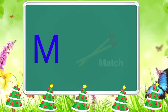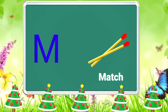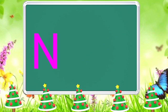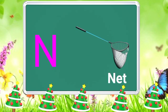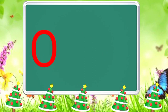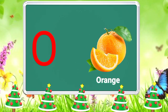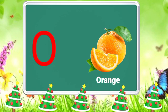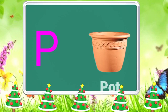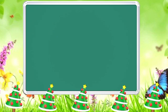M is for Mat, M-M-Mat. N is for Net, N-N-Net. O is for Orange, O-O-Orange. P is for Pet, P-P-Pet.